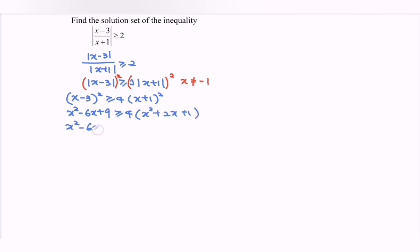So we have x square minus 6x plus 9 greater equals to 4x squared plus 8x plus 4. So rewrite the situation. We have 3x squared plus 14x minus 5 less than equals to 0.